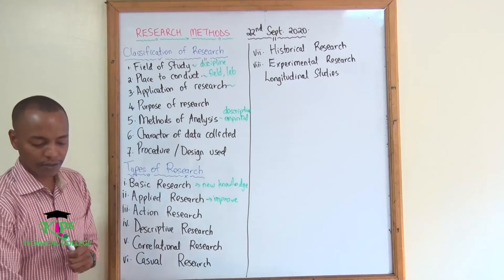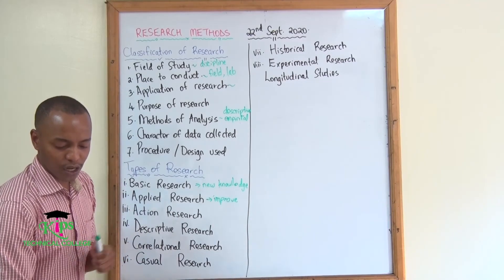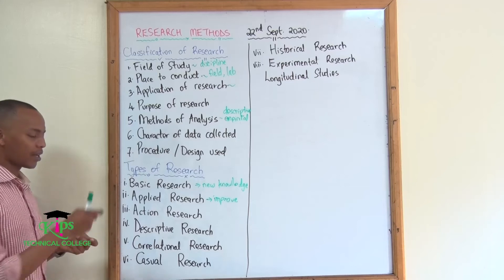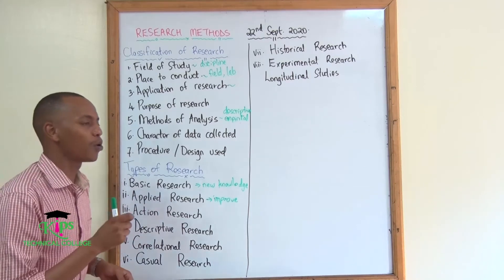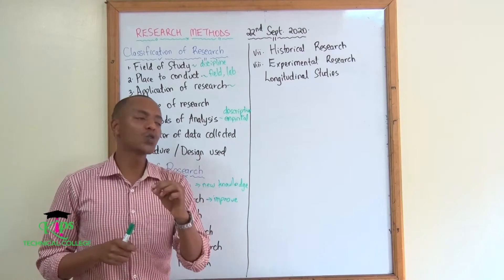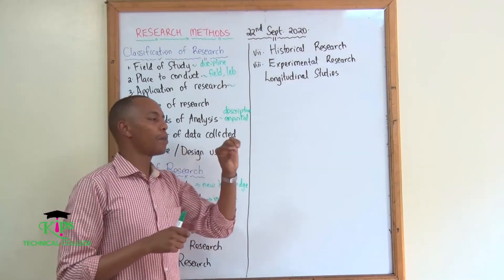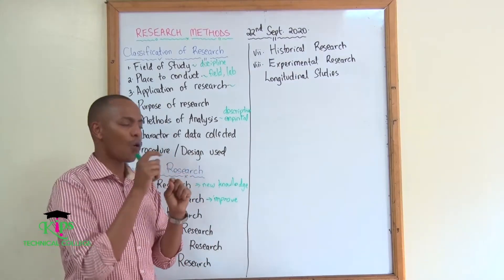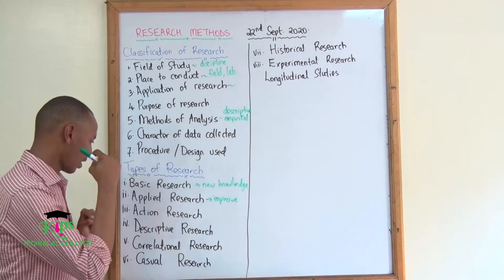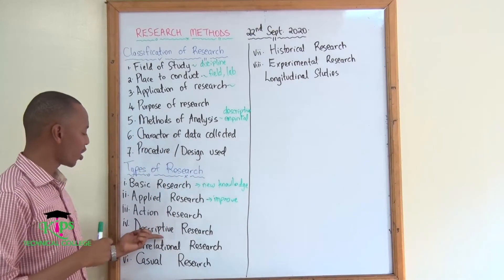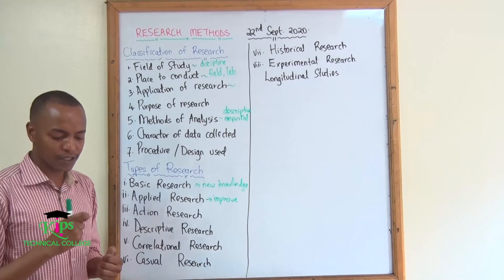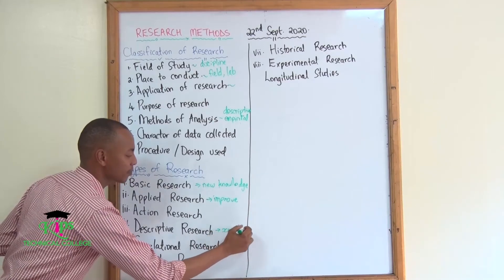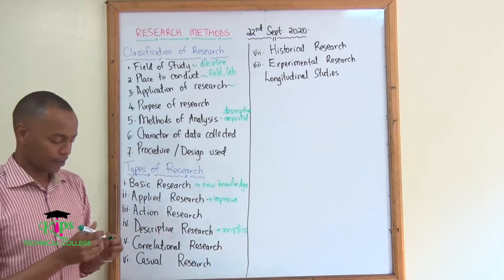Then we have descriptive research. This is usually undertaken in order to understand different levels of things. For example, we want to know the people that occupy a certain section of the economy — what is their education status, what is their age, and so on. Descriptive research tries to ascertain the characteristics of a certain place.